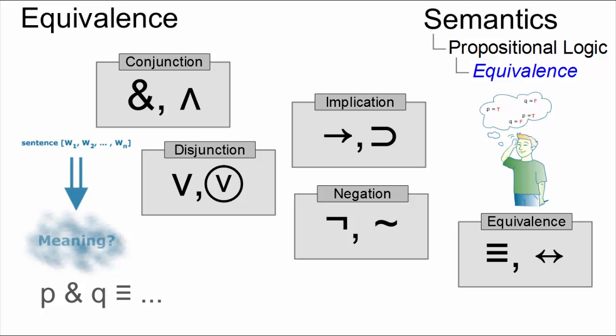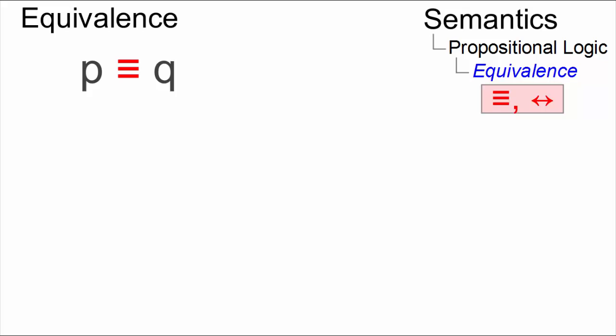Logical equivalence is used to construct compound propositions, which are true if all simple propositions have the same truth value. It is symbolized by the triple bar symbol, which is also used in maths to represent numerical equality, or by the double arrow.